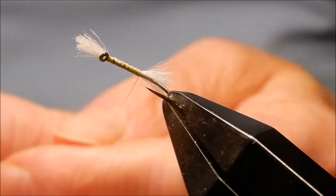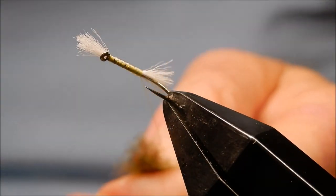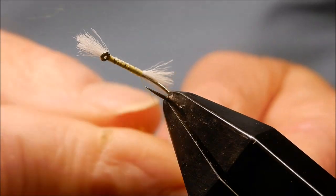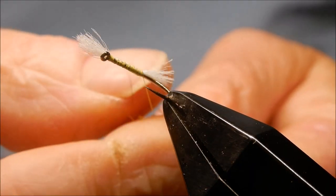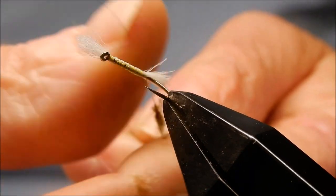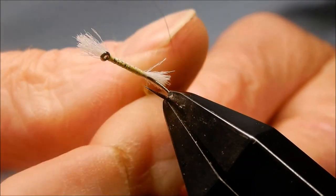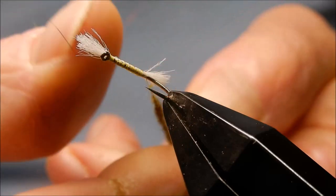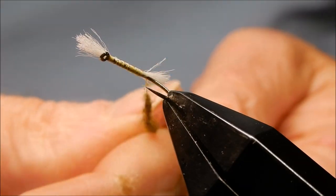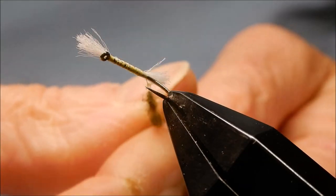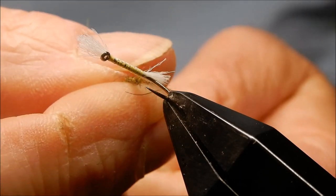I turn the vise away from me so that when I'm dubbing the dubbing onto the thread, I don't catch the point of the hook. Just keeps it out of the way. You need it to be fairly spiky, but not too spiky, not like a hare's ear. Just wind it on.